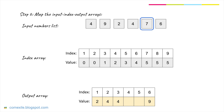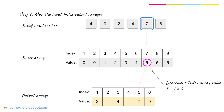Back to our input list, let's move on to the next element which is 7. Find index 7 in the index array — the value is 5. Find index 5 in the output array and fill in the value. Again, we need to decrement the index array value.